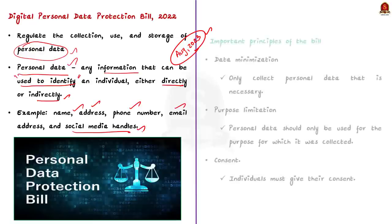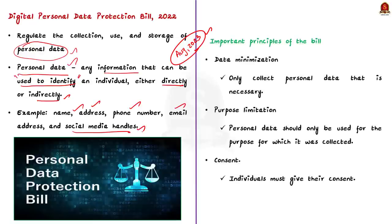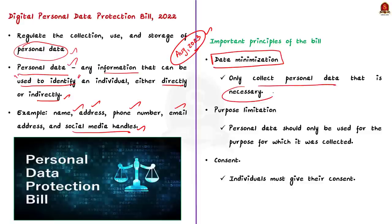The bill sets out a number of principles for the collection and use of personal data. The first principle is data minimization, which means organizations should only collect personal data that is necessary for a specific purpose for which it is being collected.